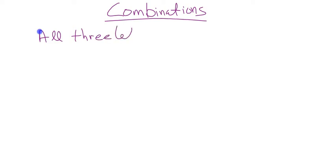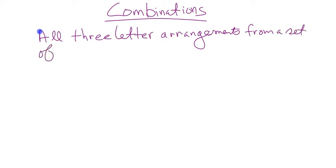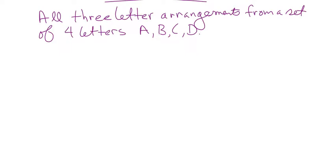Let's say that I wanted all three-letter arrangements from a set of four letters — A, B, C, and D. So how many three-letter arrangements are there from a set of four letters? How would you calculate them? What formula or math symbols would you use?